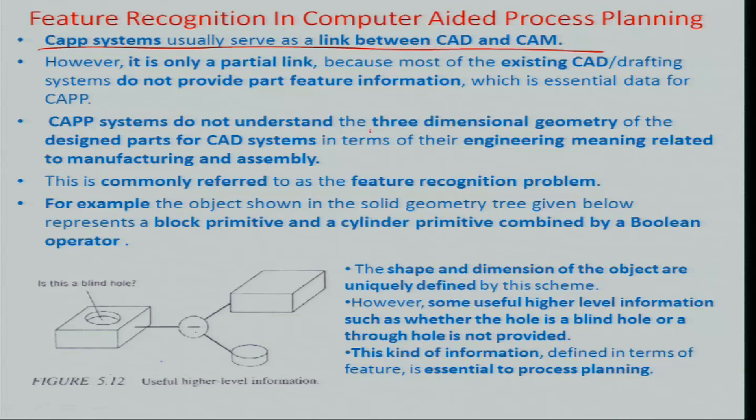Intelligence has to be built into the CAP system because CAP really needs to figure out that it has to do processing on a certain place where probably there is a hole which exists in the machine drawing of the final part, but the blank does not have a hole. The logic that if there is no hole in that region and you have to do a machining operation to make the hole — this comes from the CAP system. This is commonly referred to as the feature recognition problem.